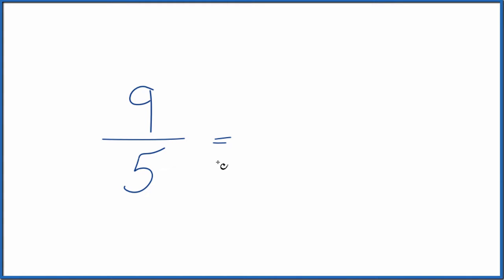5 goes into 9 one time with a remainder of 4. 1 times 5, that's 5. 5 plus 4 gives us 9.